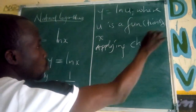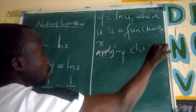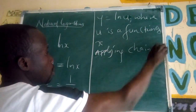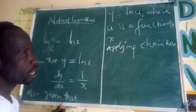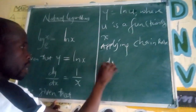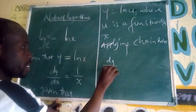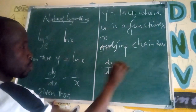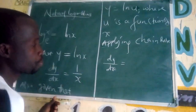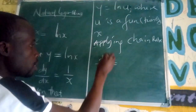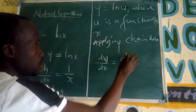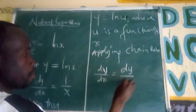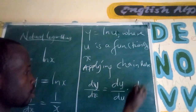We use the chain rule. dy by dx equals dy by du dot du by dx.